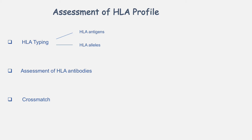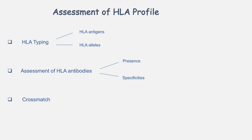The second aspect of assessment of HLA profile is assessment of HLA antibodies. If a person is exposed to non-self HLA molecules, it can result in formation of anti-HLA antibodies. So in the recipient, we want to know if any anti-HLA antibodies are present and what their specificities are. Finally, in cross-match, we identify if the recipient has any antibodies specific against donor HLA molecules.